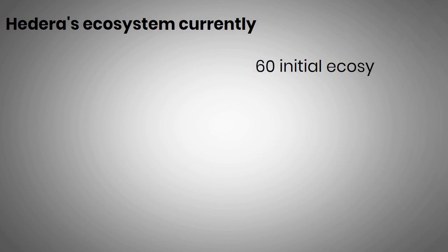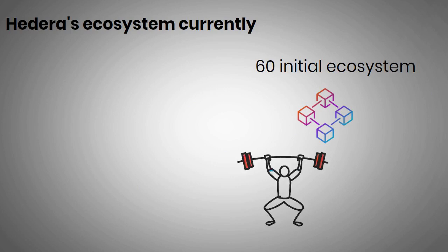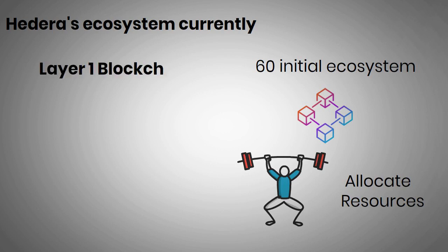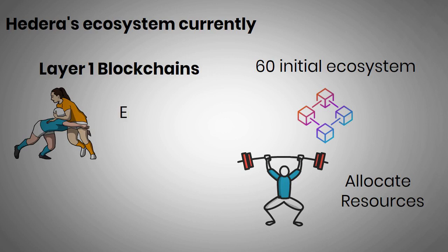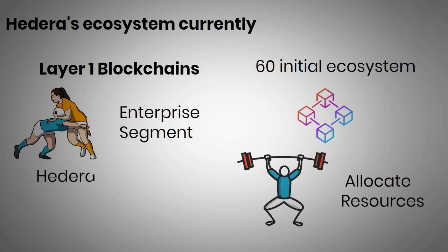Hedera's ecosystem currently has over 60 initial ecosystem partners, but most organizations have a non-blockchain core business. As such, the project's potential will depend on whether these businesses can allocate resources to focus on developing the blockchain sector and when to bring these products to their customers. With many Layer 1 blockchains being released recently, competition for market share is inevitable. However, the enterprise segment still lacks many platforms to engage in this area, so Hedera will have the advantage of being a leader for future developments.